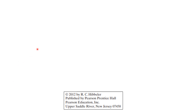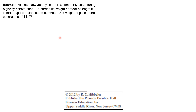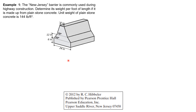Let's have the solution to the first example. The New Jersey barrier is commonly used during highway construction. Determine its weight per foot of bed. It is made up from plain stone concrete. The unit weight of plain stone concrete is 144 pounds per cubic foot — either given or found by consulting the table for densities of common materials. This is part of your analysis, and this is the figure.